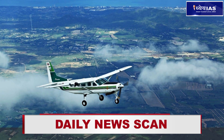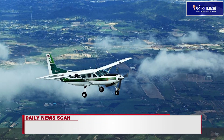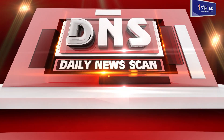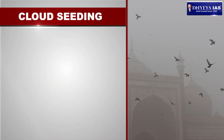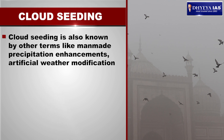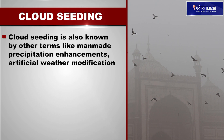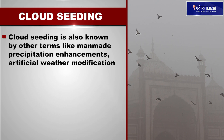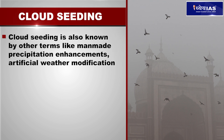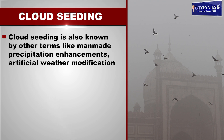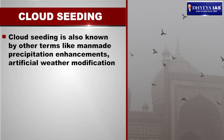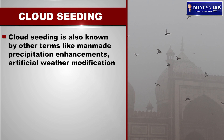Cloud seeding is a weather modification technology to artificially create rain. It is also known by other terms like man-made precipitation enhancement and artificial weather modification.